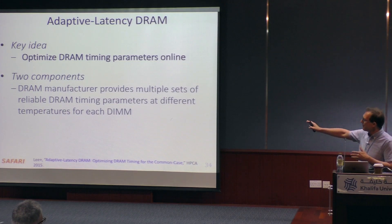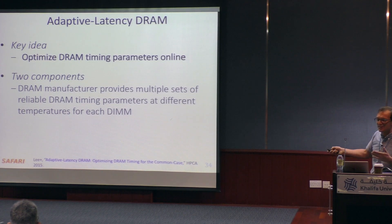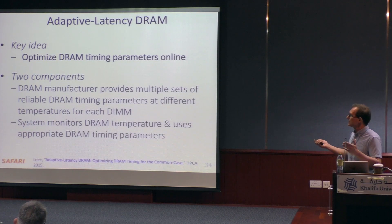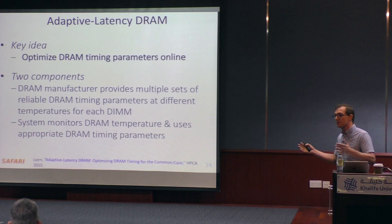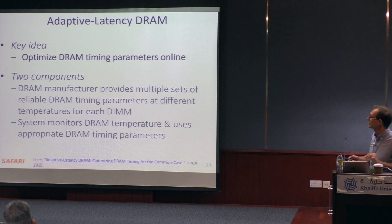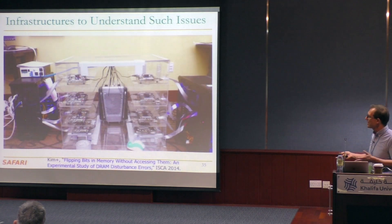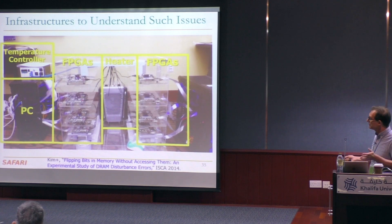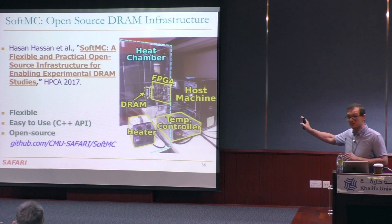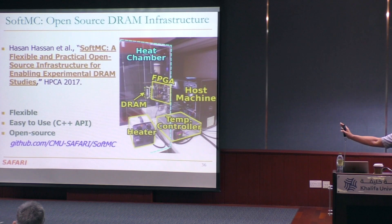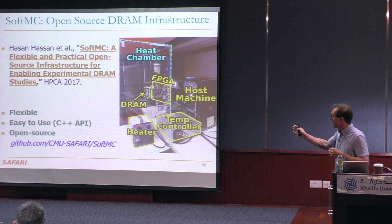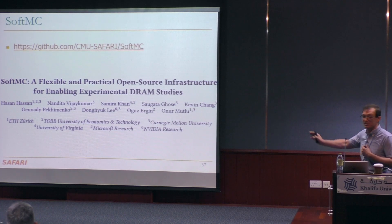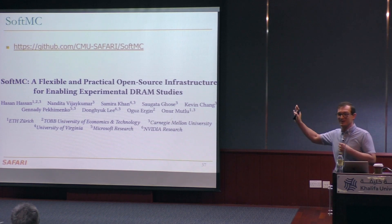We have a way of getting reliable latency parameters for different DIMMs, different DRAM modules, and different temperatures. While the program is executing, the system monitors the DRAM temperature and uses the appropriate timing parameters for each different chip. This can be done with relatively low cost. We analyzed many chips with our FPGA-based testing infrastructure for memory. We built a lot of these infrastructures to understand memory-related issues, and we've open-sourced this infrastructure. Other people are already using it in academia, and people can download the source code and do whatever they want with it.